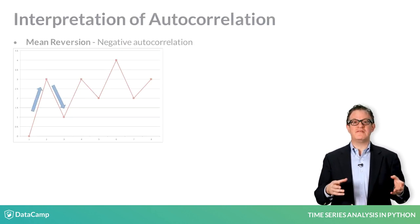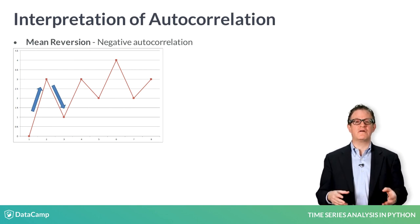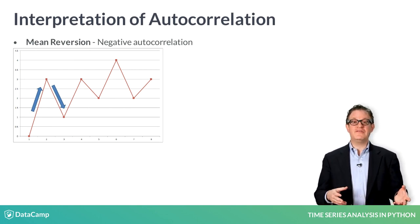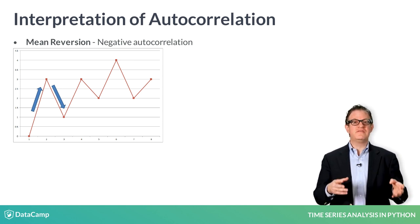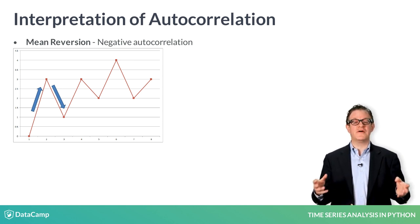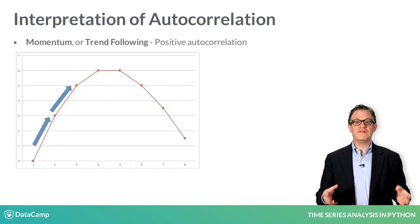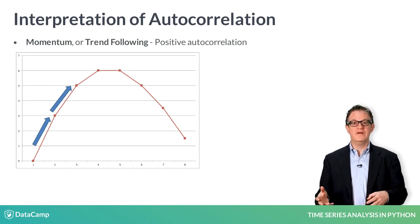What does it mean when a series has a positive or negative autocorrelation? With financial time series, when returns have a negative autocorrelation, we say it is mean reverting. Alternatively, if a series has positive autocorrelation, we say it is trend following.